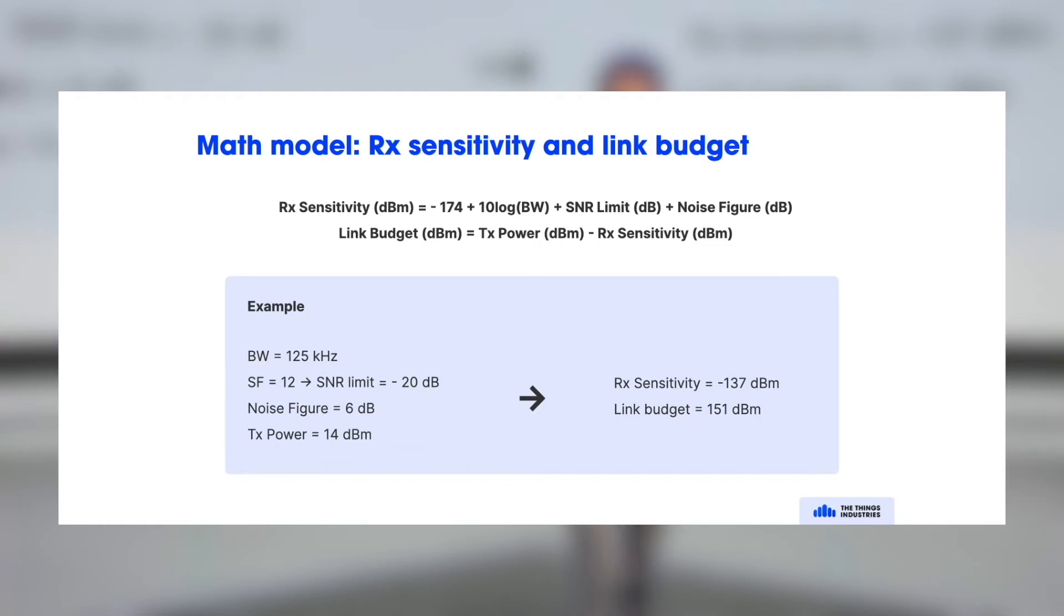So here's an example. With 125 kilohertz bandwidth, so that's the typical bandwidth used in LoRa communications, a spreading factor of 12, that's the highest spreading factor, or the lowest data rate, which is best for the longest range.